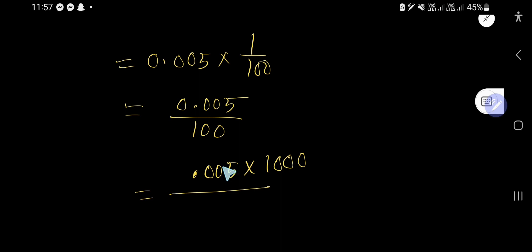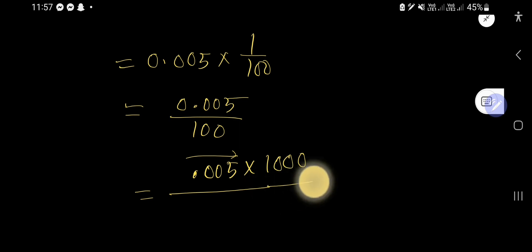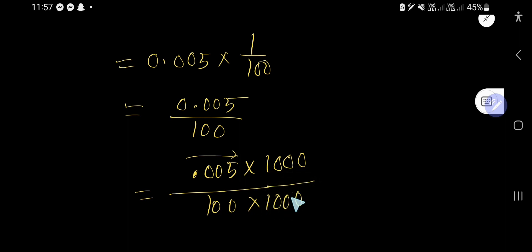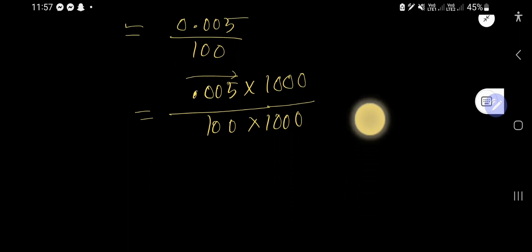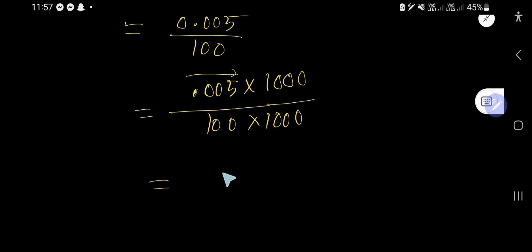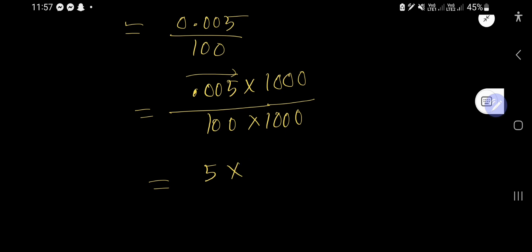Multiplying by 1000 moves the decimal three places to the right. To keep the value the same, we also multiply the denominator by 1000. The numerator 0.005 times 1000 gives us 5, and the denominator becomes 100 times 1000.